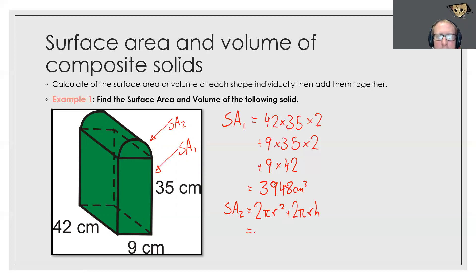That formula will be found on your formula sheet when you're sitting your HSC exam. So 2 times π times my radius. Now my radius is halfway across the circle which would only be half of 9, so we've got 4.5 there. So 4.5 squared plus 2 times π times my radius again times by my height. Now the height of the cylinder is this length here which we know to be 42.